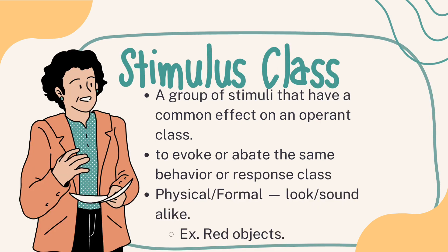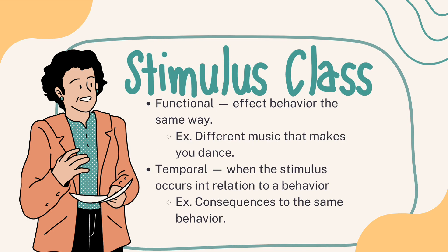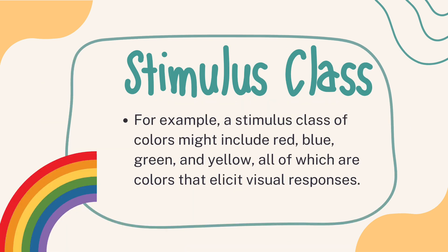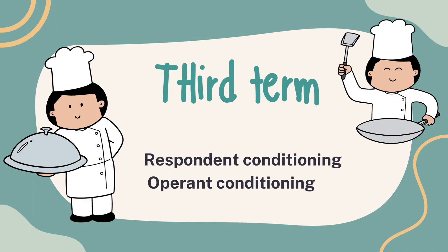A stimulus class, on the other hand, is a group of stimuli that share similar characteristics and elicit similar responses. For example, a stimulus class of colors might include red, blue, green, and yellow — all of which are colors that elicit visual responses.